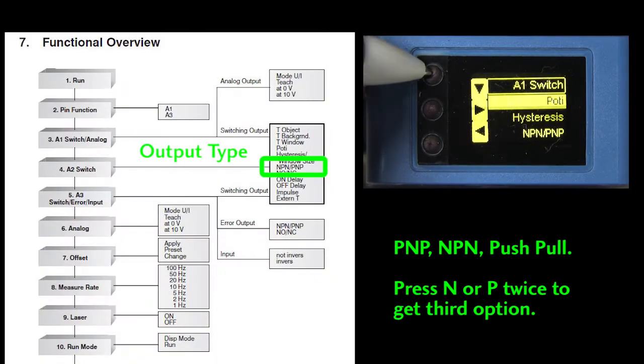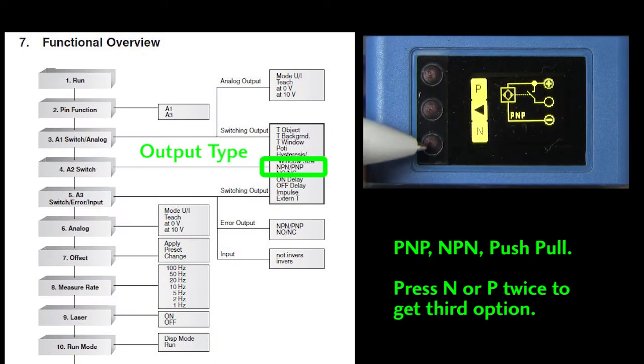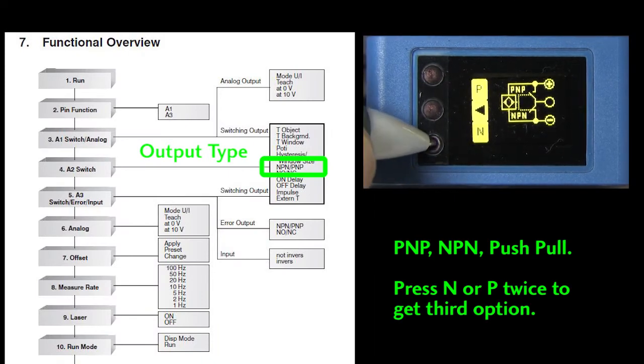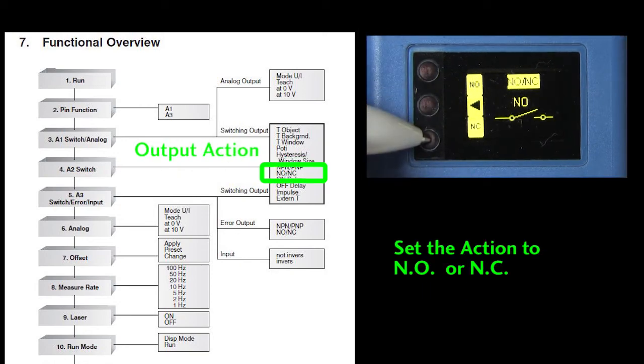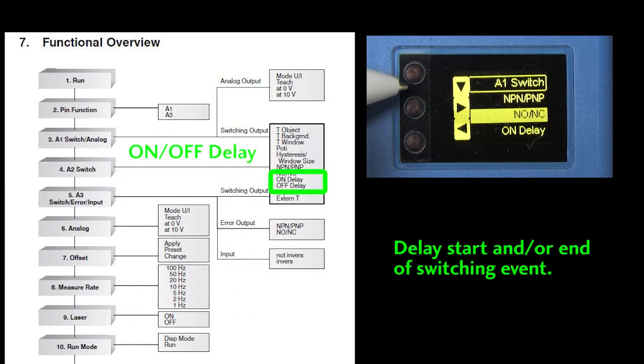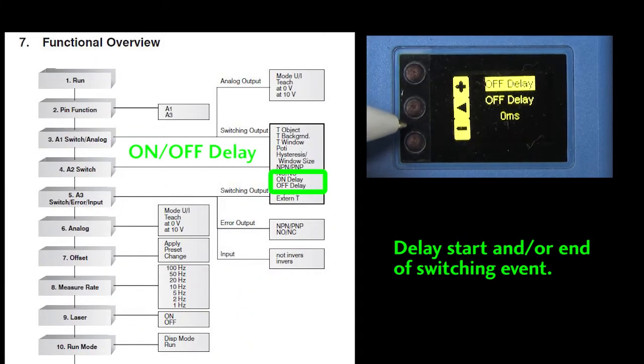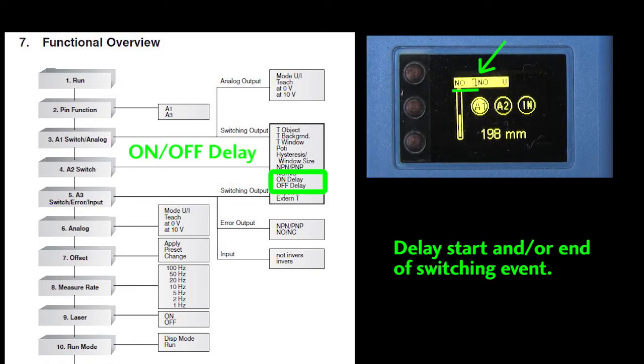This menu lets you set the output type. You can choose from these three options and look – it even shows you a diagram for each one. That's pretty cool. This menu lets you pick if the output should be normally open or normally closed. The on delay and off delay menus adjust how long the sensor waits to report the start or the end of an event. You can set the time from zero to 10 seconds. This little falling edge right here tells you that the off delay is enabled for this contact and this one tells you that the on delay is enabled. That's really handy.